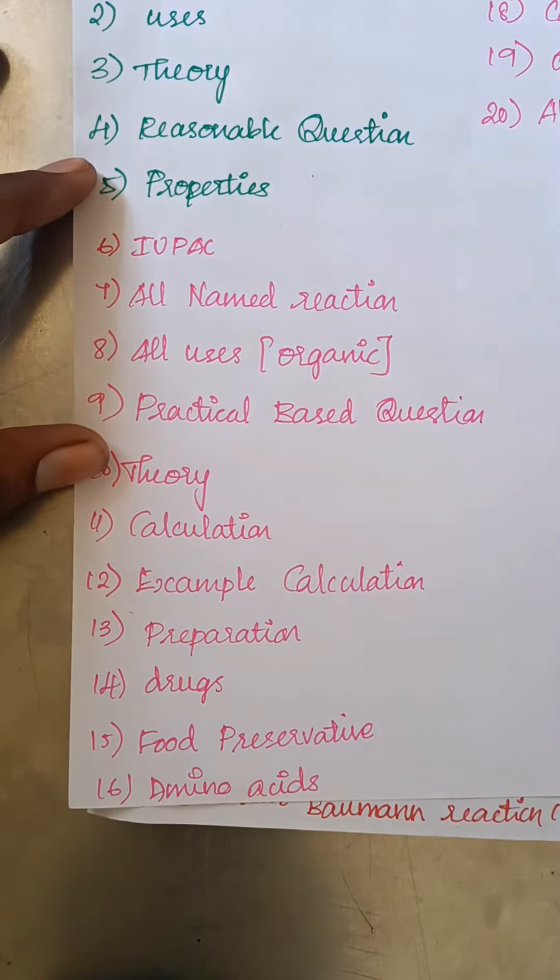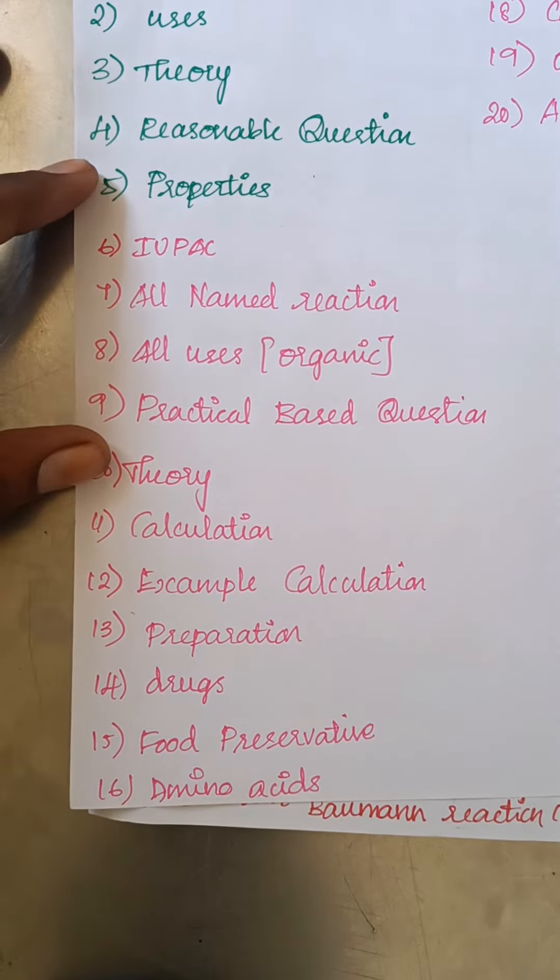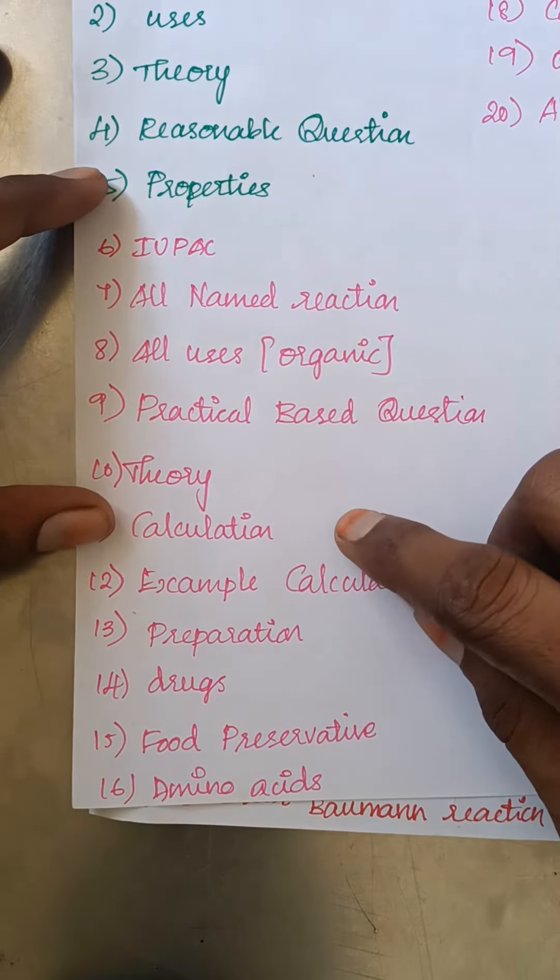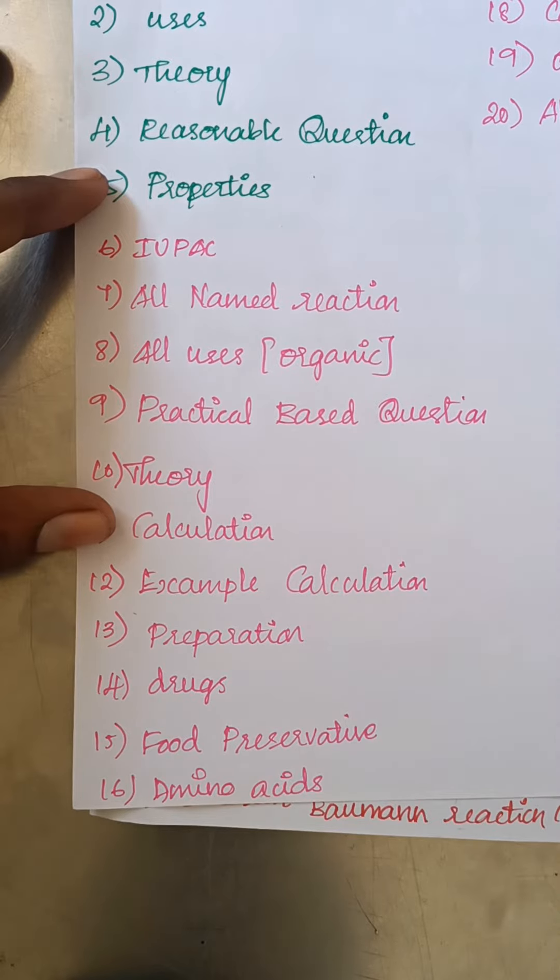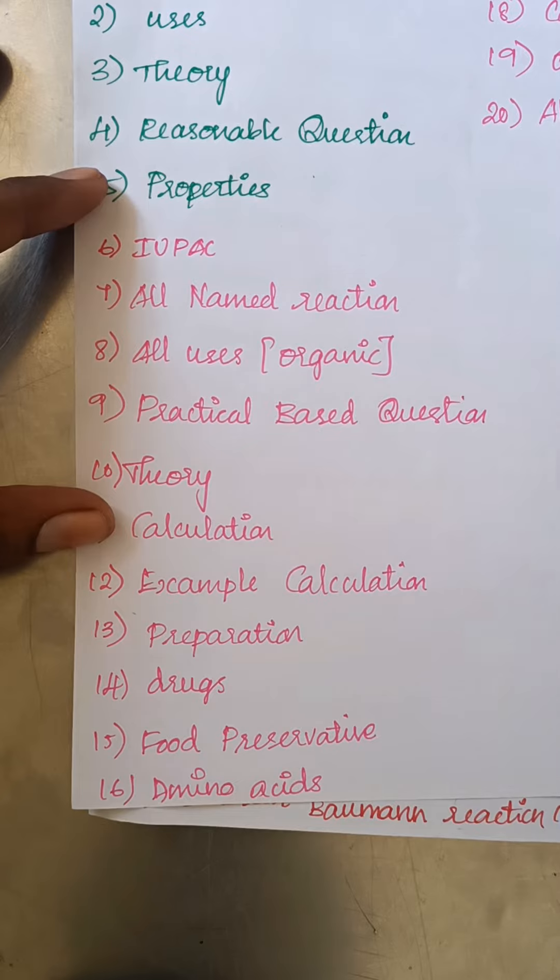We will talk about properties based questions. Calculation next. Now you will talk about FCC, BCC, kinetics, first order, zero order, pseudo first order, half-life, that is theory. Ostwald dilution law, Nernst equations. This is a calculation question.